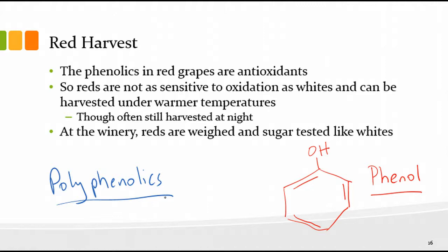Some of that oxygen we actually want, because it helps polymerize phenolic compounds and softens tannins. Part of the aging process is allowing a little bit of oxygen in to help polymerize phenolics. The flip side is that phenolic compounds protect against oxidation by absorbing oxygen, keeping it from reacting with ethanol to make acetaldehyde — that nutty or apple cider flavor — and preserving fruity compounds. Because reds naturally have higher phenolics, they are not as sensitive to oxidation as whites.